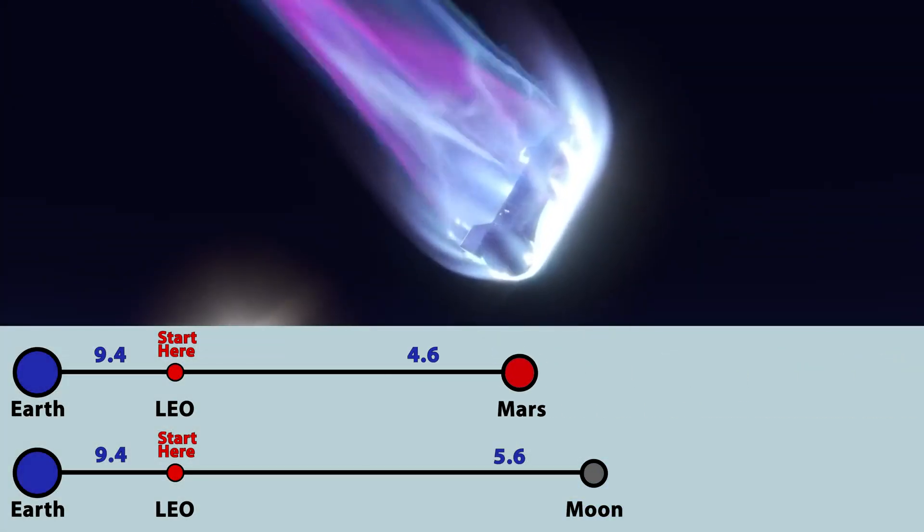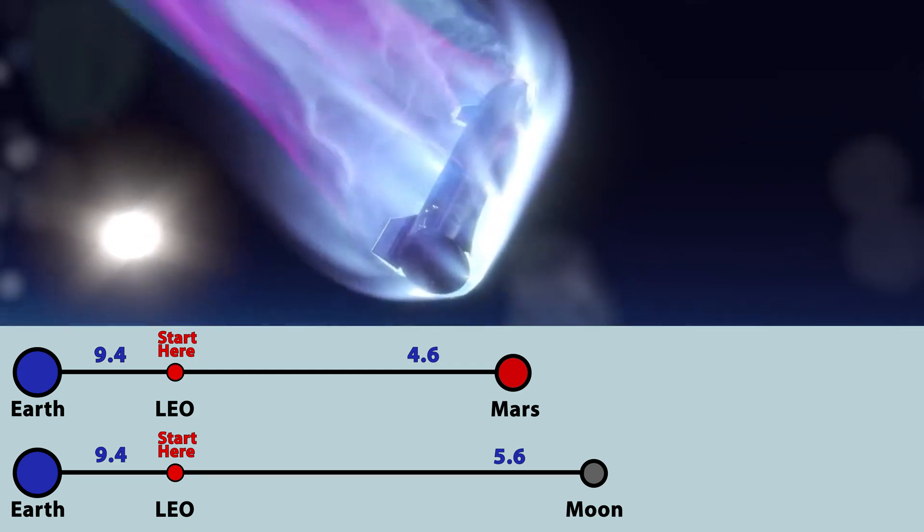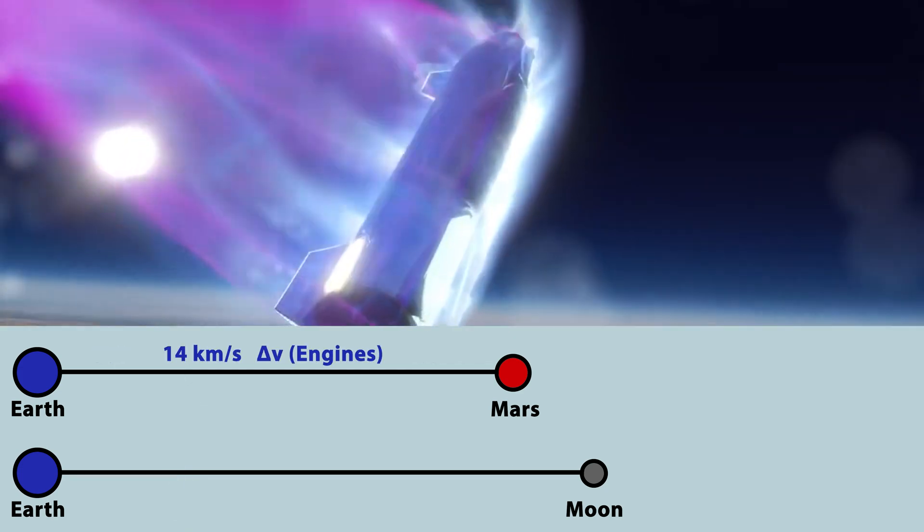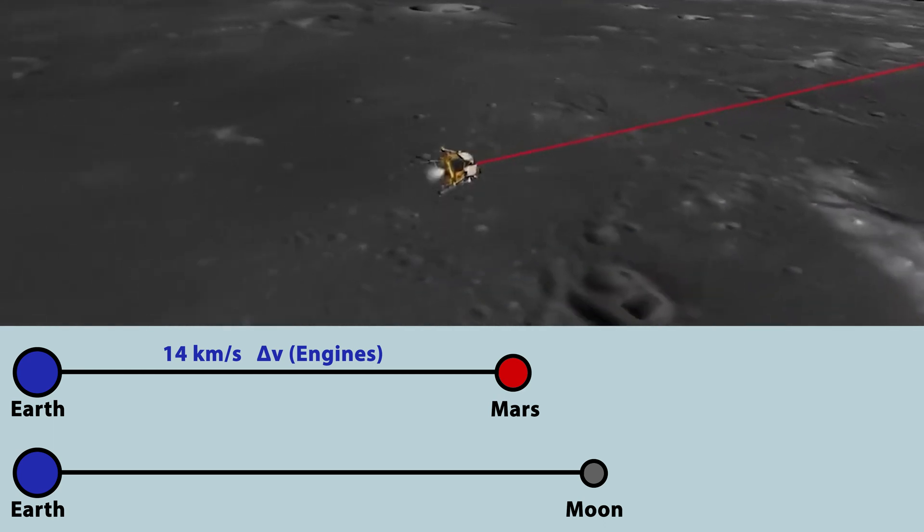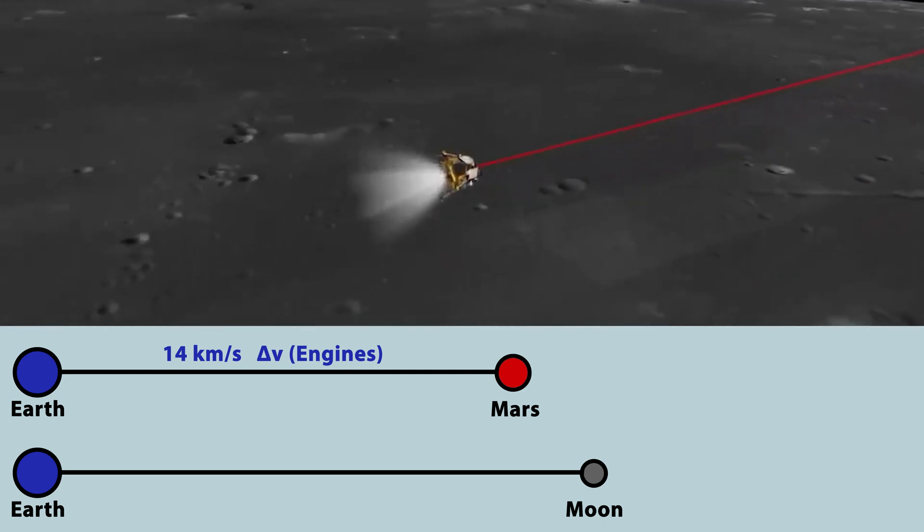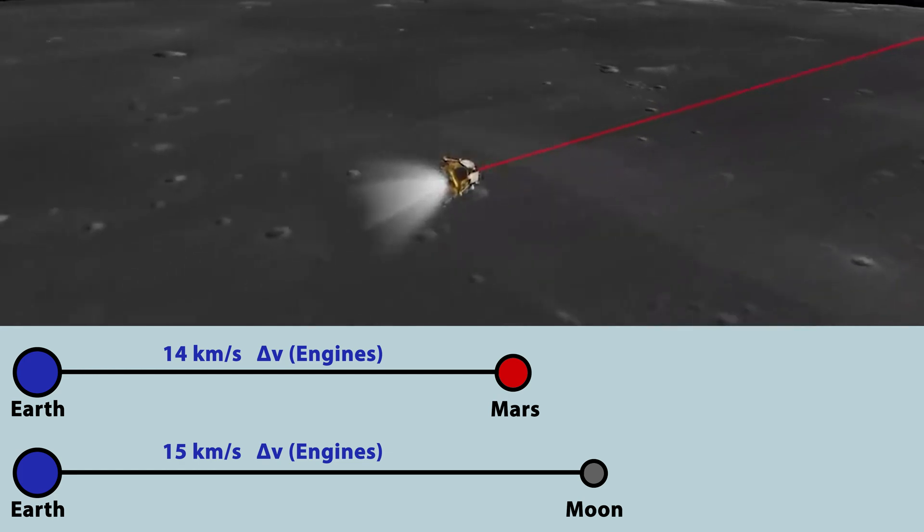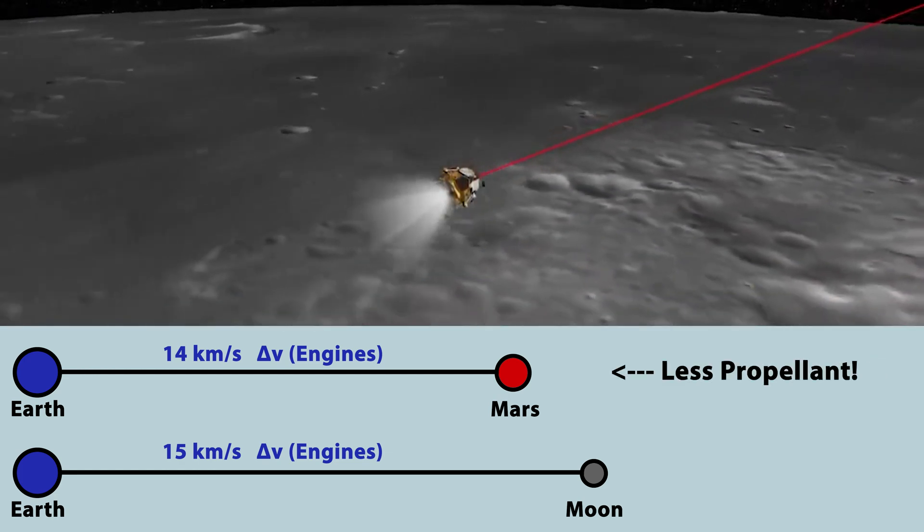Even so, by using the Martian atmosphere to slow down, our engines only have to provide 14 km per second of delta-v to get to Mars. The Moon doesn't have an atmosphere to slow down against, so getting there would require the engines to provide the full 15 km per second of delta-v needed for the mission. This is why it takes less propellant to get to Mars.